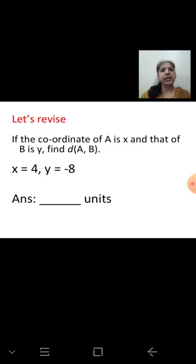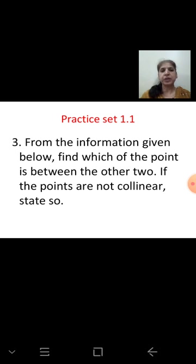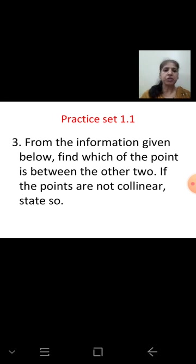We can also find coordinates if a number line is given. Let's continue with Practice Set 1.1, from the third question: from the information given below, find which of the points is between the other two. If the points are not collinear, state so. Collinear points are points through which a single line passes.